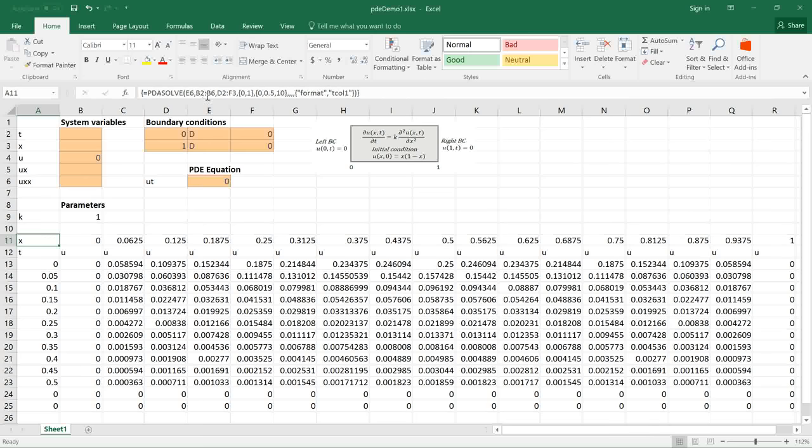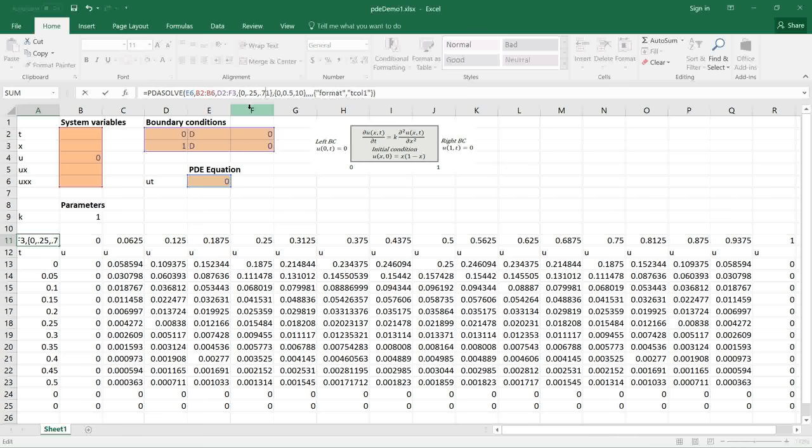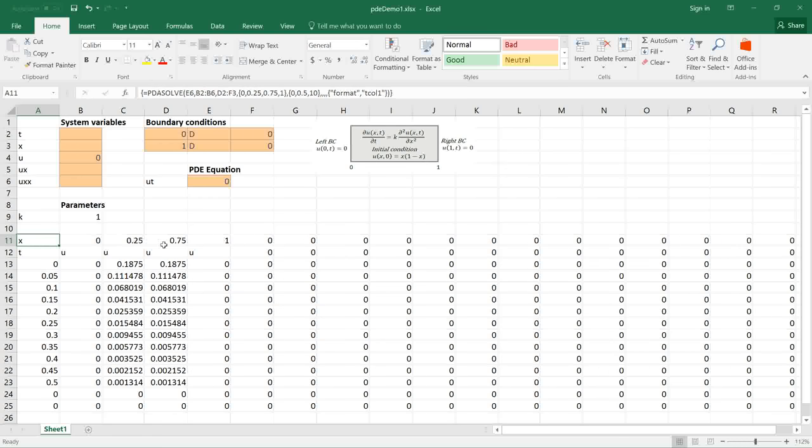I can also specify the exact output points for X, for example 0.25 and 0.75 and run again. Now I get exactly the points I requested.